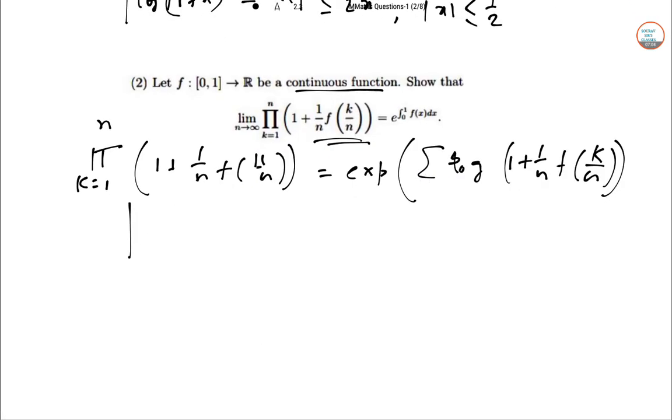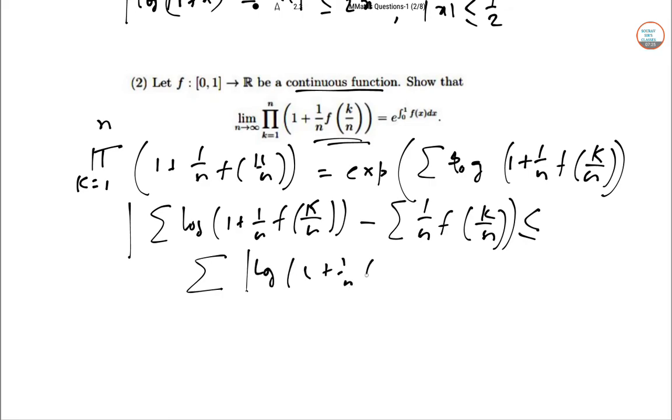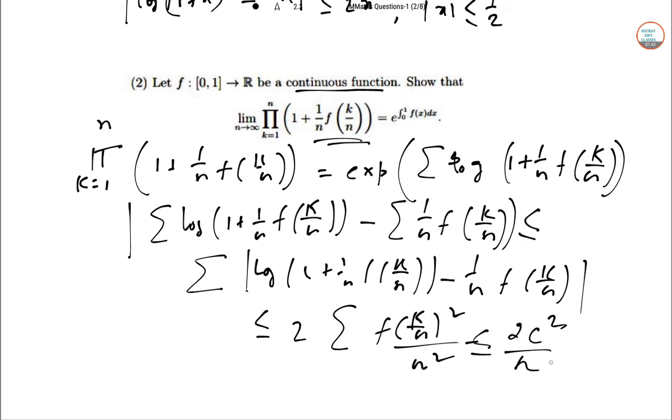So we have this estimate. So modulus log of 1 plus 1 by N F of K by N this thing minus summation of 1 by N F of K by N. So the difference it has to be more than this difference and that is less than equal to the double of F of K by N square N square and that is less than equal to 2 C square by N. Hence,